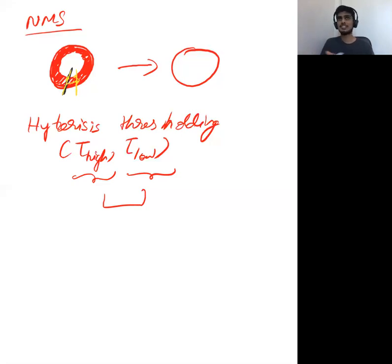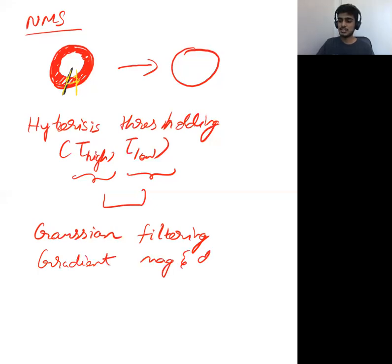This is the basic steps behind Canny edge detection algorithm. Just to recap, there are four steps. First, apply Gaussian filtering. Next you find gradient magnitude and direction. Next you do NMS, and next you do Hysteresis Thresholding.